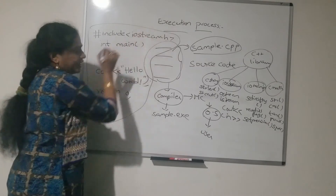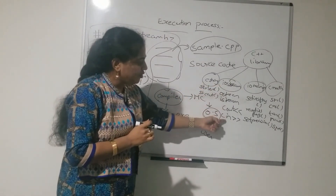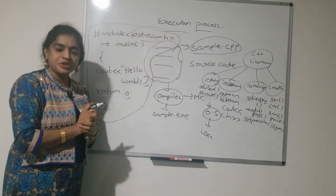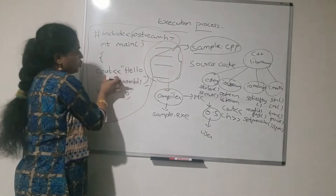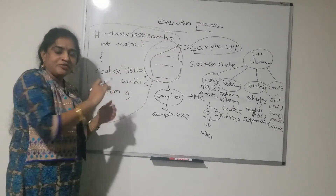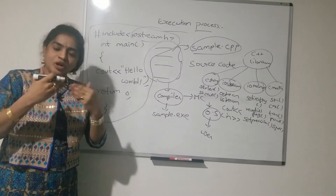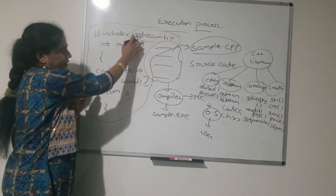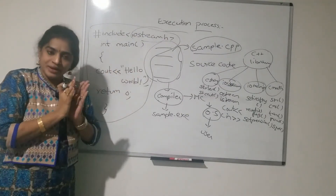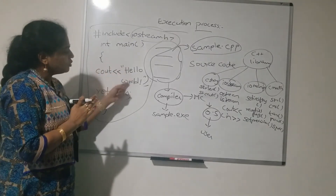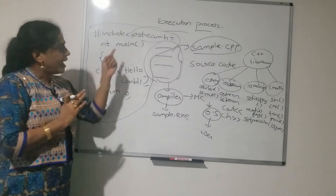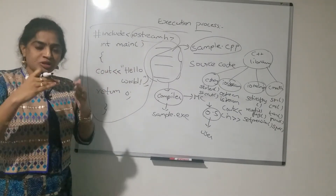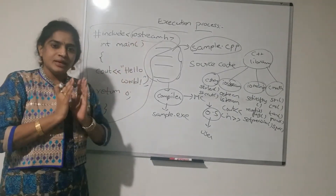If you want to make use of those functions or classes, you have to include the appropriate header file in your program. Here I am including iostream.h. If you want to use the functions cout and cin in your program, you must include this header file — iostream.h means input-output stream. Without including this header file, the cout statement will not be executed. So if you want to use input and output functions, you must include iostream.h.